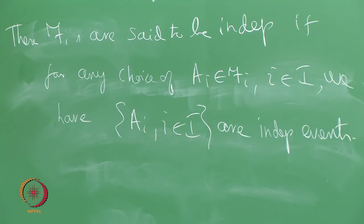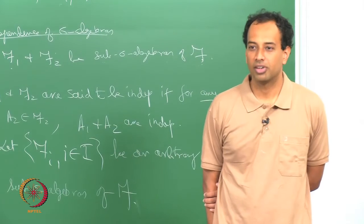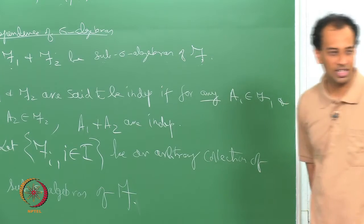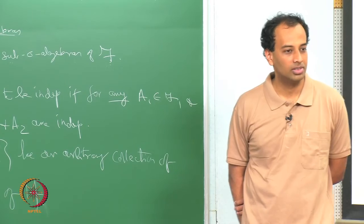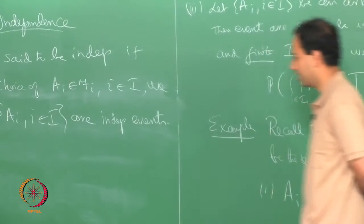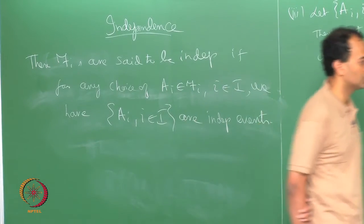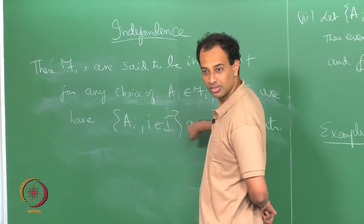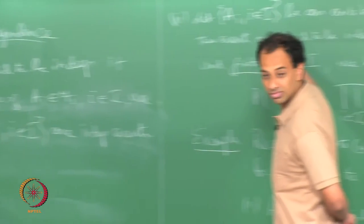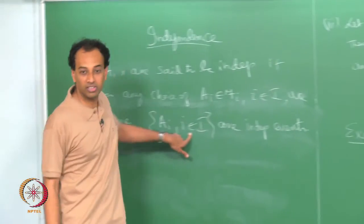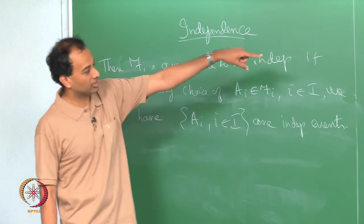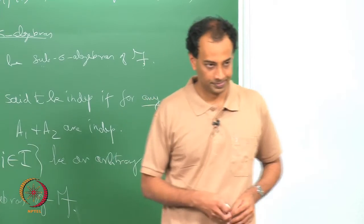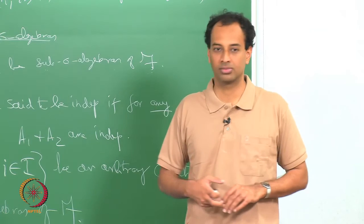Given an arbitrary collection of sub-sigma algebras of F, from each sigma algebra you pick any A_i you want. No matter which way you pick the A_i's, if {A_i : i ∈ I} are independent events, then this collection of sigma algebras is said to be independent. Since this could be an infinite or even uncountable collection, we go back to the definition and say: for every finite I_0, the intersection probability must equal the product. This gives a hierarchy of definitions.